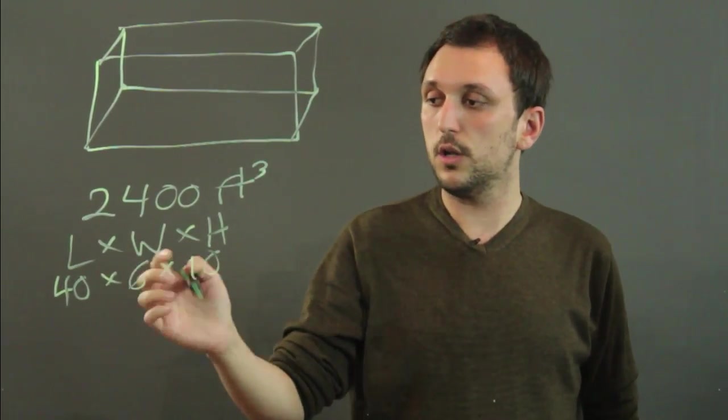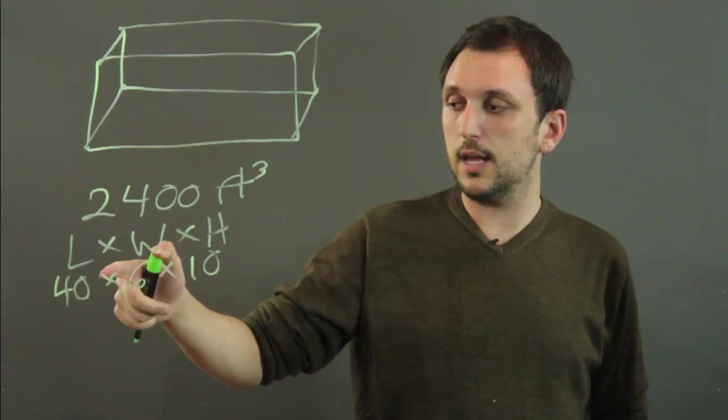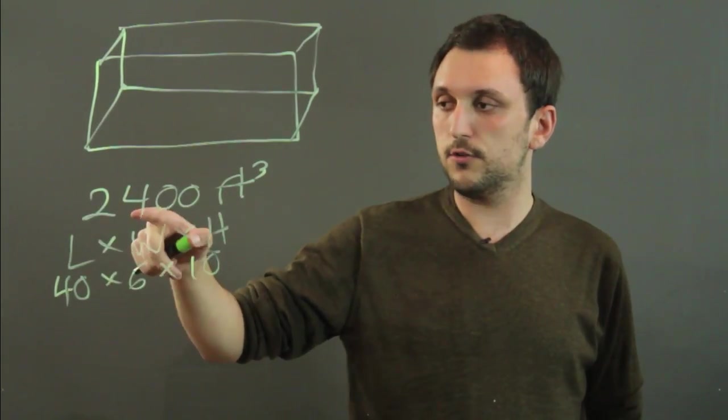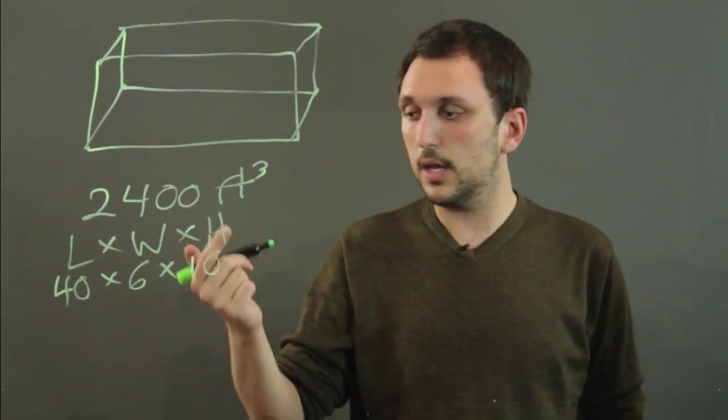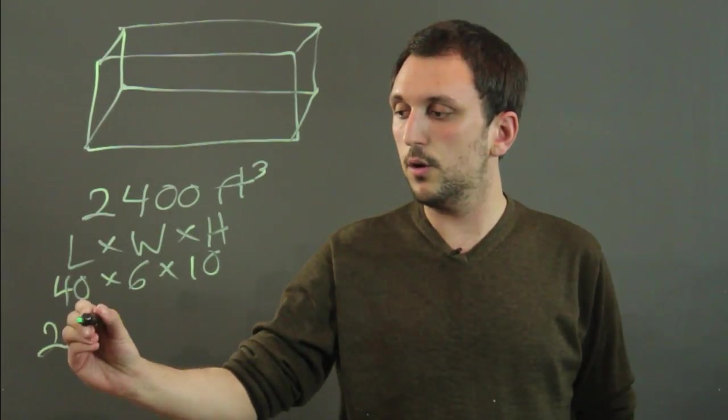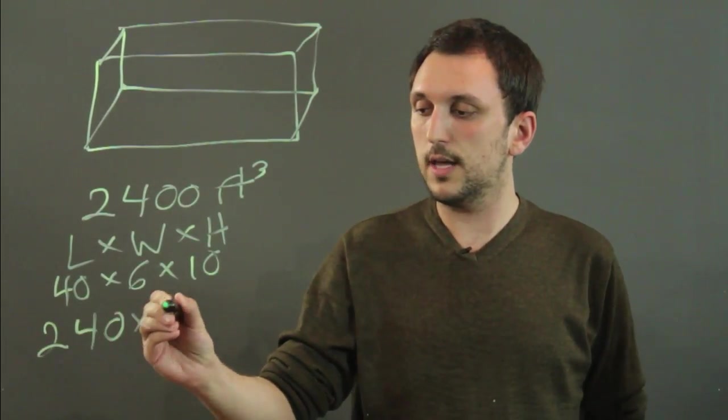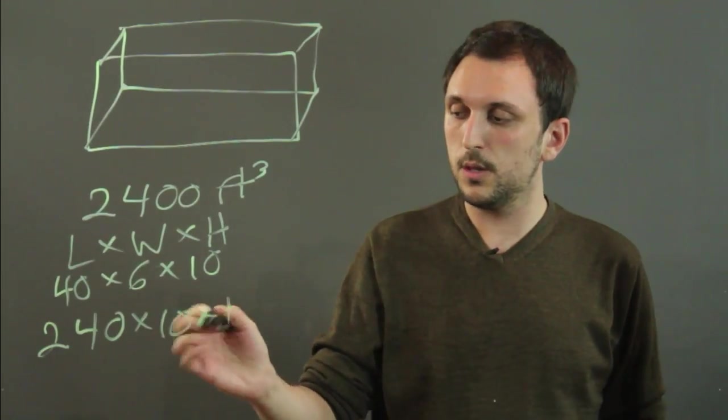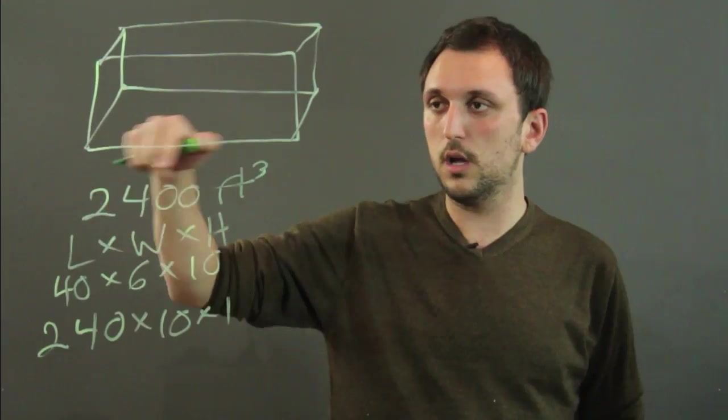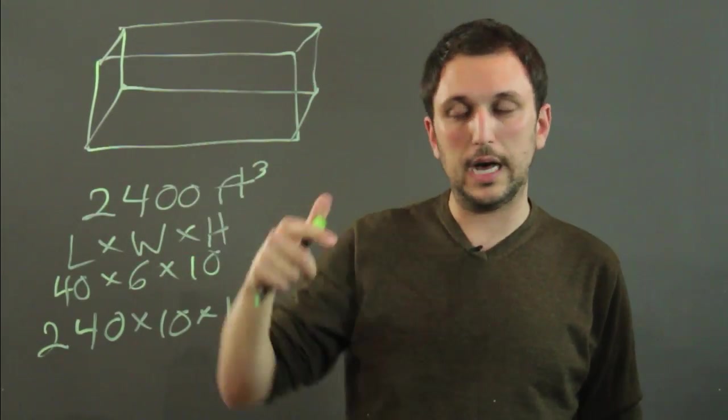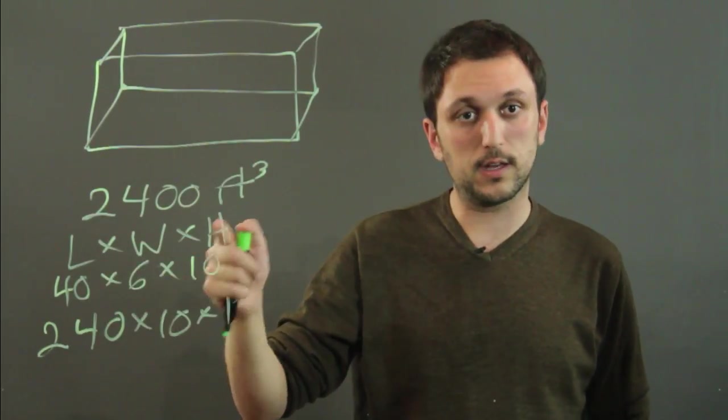So, in general, you'd have to guess because you can't exactly tell what the dimensions are going to be from the cubic feet. We could break down 2,400 plenty of other ways. We could say it was 240 times 10 times 1, but that doesn't look realistic. It doesn't look like it's 240 feet long and only 10 wide and only 1 high. It looks more like it's 40 by 6 by 10.